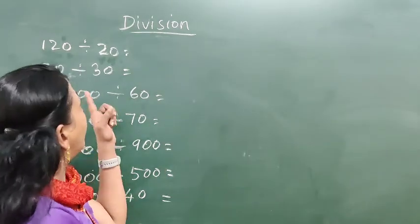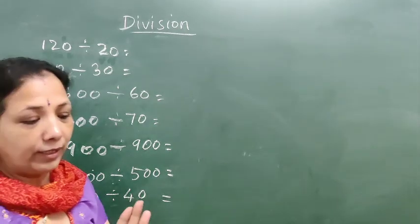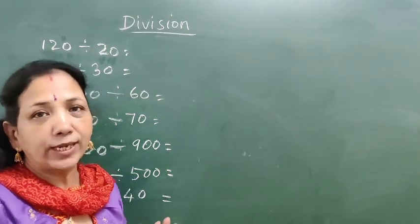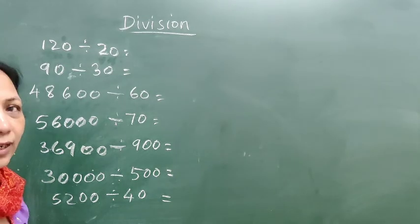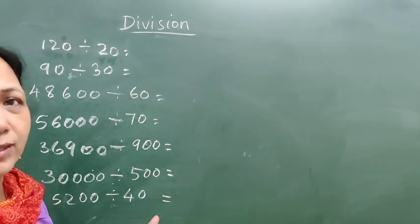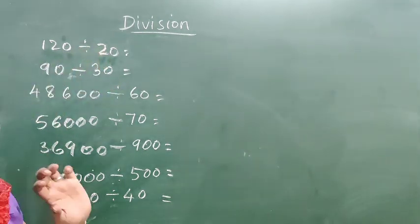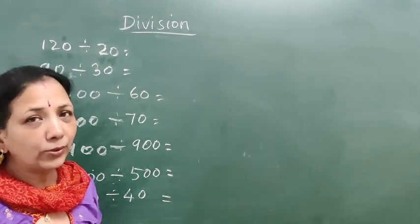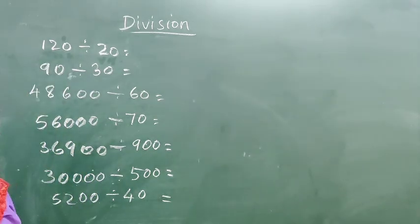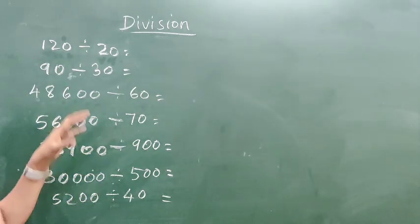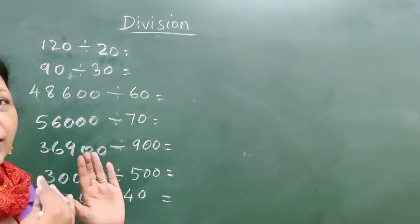Hello kids, today I will show you how to divide with numbers where 0s are coming — like 10, 20, 300, 40, 600, 6000. I already showed one video on dividing with 100,000 and similar numbers. The rule is: how many 0s are coming, that many places will be the remainder, and the remaining digits will be the quotient.